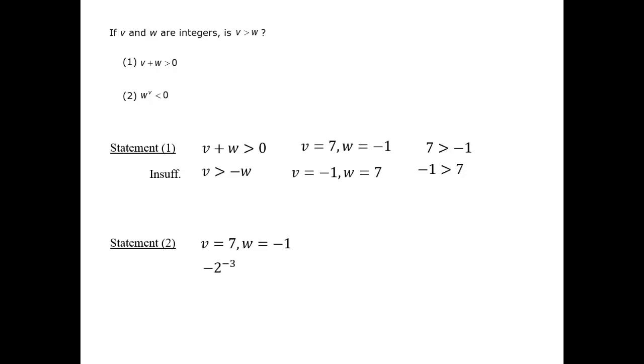v to the w could be minus 2 to the minus 3 power. Minus 3, or v, is less than w, which is minus 2, it's left of it on the number line. And minus 2 to the minus 3 power is negative 1 eighth, which is less than 0, and therefore this case is allowed by statement 2.